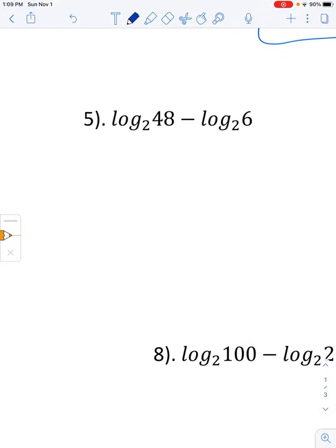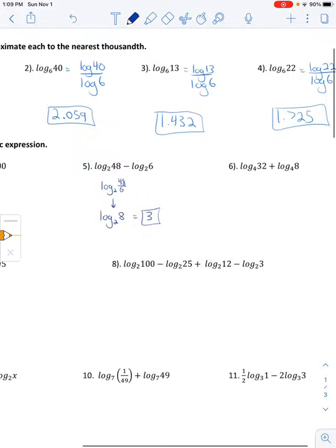When we subtract two log expressions with the same bases, we can divide their arguments together. So that goes log base 2 of 8. How do we get from 2 to 8 using an exponent? 2 to the power of 3 would be the exponent.